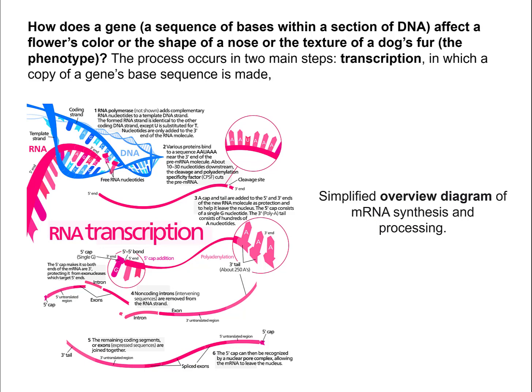RNA transcription is the process by which we make a copy of that region of the DNA into something called messenger RNA. Enzymes open up the DNA, and we make the RNA transcript — it's just a complementary strand of the segment of DNA that actually makes sense. The opposite strand is the one that doesn't make sense; it's called the antisense strand.